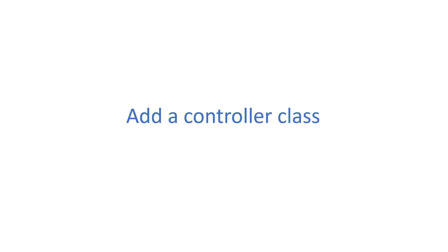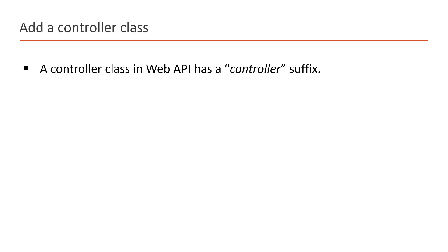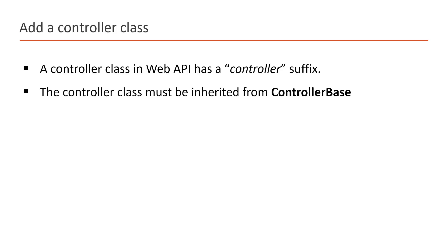Before adding a new controller class in this application, here are some important points. The controller class in Web API has a 'Controller' suffix — so if you want to add a controller named 'Employee', the name will be 'EmployeeController'. This controller class must be inherited from the ControllerBase class. If you are coming from an ASP.NET Core MVC background, over there we used the Controller class. The Controller class used in MVC has support for views, ViewBag, ViewData, etc., but in Web API we do not need those concepts, so we simply use the ControllerBase class.